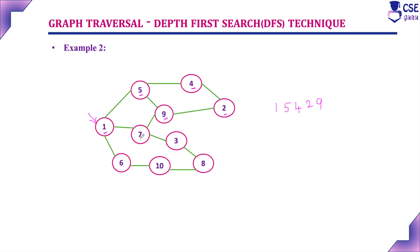Consider the adjacent unvisited vertex to the currently visited vertex 9. The unvisited vertex is 7, because 5 is already visited and 2 is already visited. So we visit 7 next. Consider the adjacent unvisited vertex to 7, that is 3, because 1 is already visited. So unvisited is 3.